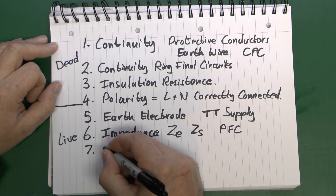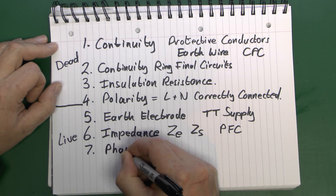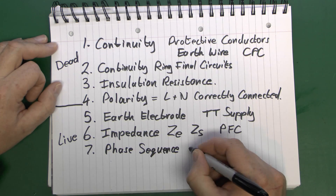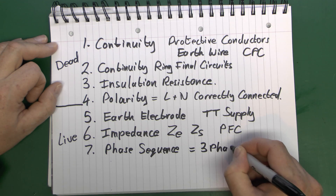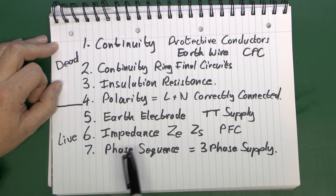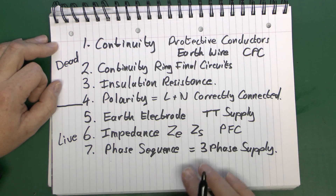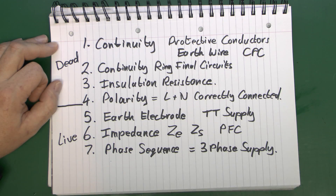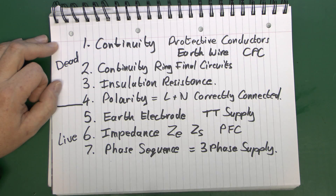Number seven is phase sequence. Rather obviously, this only applies if you have a three-phase supply, because if you've only got one phase, you can't really have a sequence. If you've got a three-phase supply, you need to make sure the phases actually go in the correct order. If not, and you've got three-phase motors attached, they'll turn backwards — which generally causes expensive and probably irreversible damage to the equipment. So only applicable for three-phase supplies, but if you've got one, it's certainly necessary.